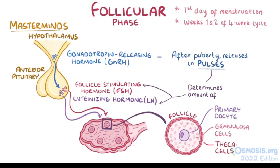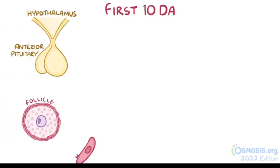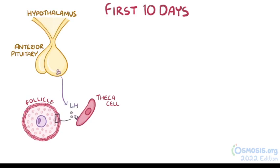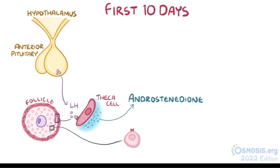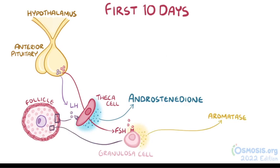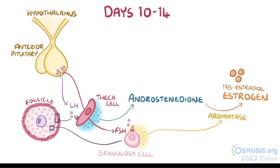Over the course of the follicular phase, these oocyte-containing groups of cells, or follicles, grow and compete for a chance at ovulation. During the first 10 days, theca cells develop receptors and bind luteinizing hormone, and in response secrete large amounts of androstenedione, an androgen hormone. Similarly, granulosa cells develop receptors and bind follicle-stimulating hormone, and in response produce the enzyme aromatase, which converts androstenedione from the theca cells into 17-beta-estradiol, a member of the estrogen family. During days 10 through 14, granulosa cells also begin to develop luteinizing hormone receptors, in addition to the FSH receptors they already have.